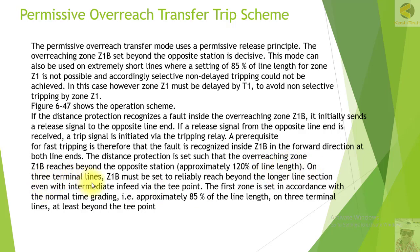On three terminal lines, Z1B must be set to reliably reach beyond the longer line section, even with the intermediate in-feed via the T point. The first zone is set in accordance with the normal time grading, that is approximately 85% of the line length, and on three terminal lines at least beyond the T point.